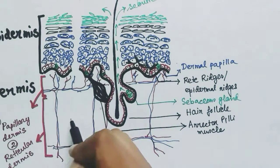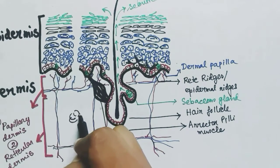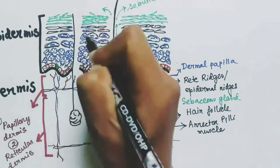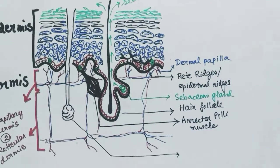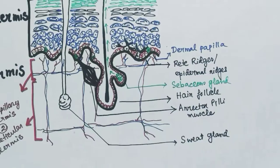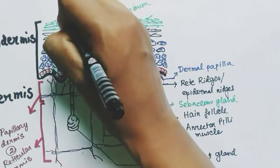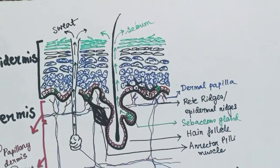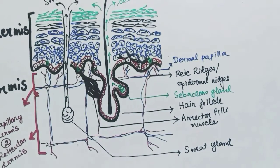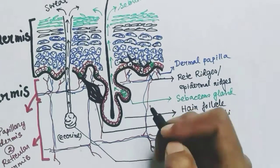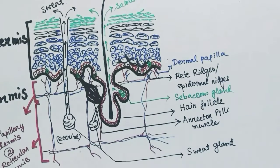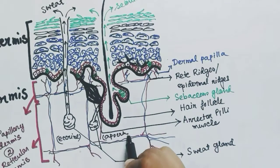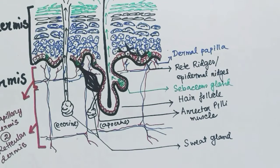Another component is the sweat glands, which produce and release sweat out of the skin. There are two types of sweat glands: eccrine and apocrine. The apocrine type is connected to the hair follicle, while the eccrine sweat gland is independent.